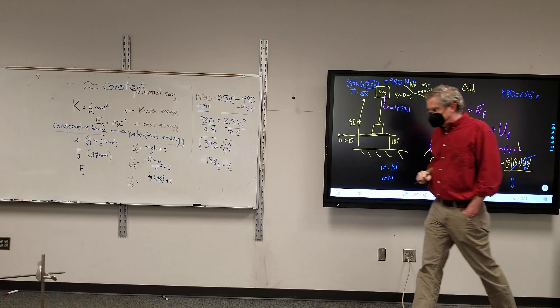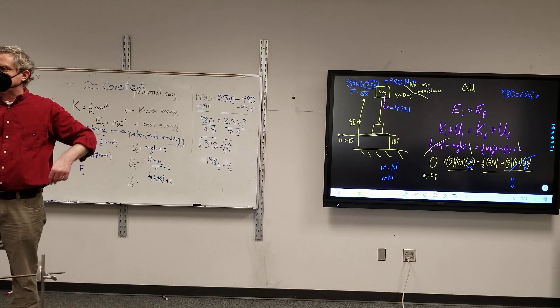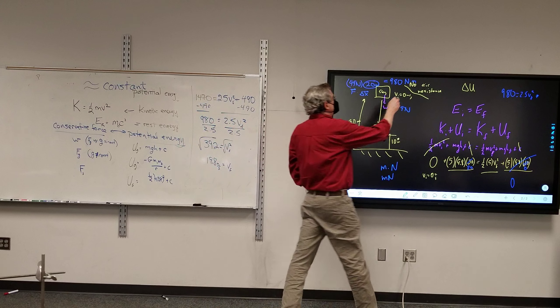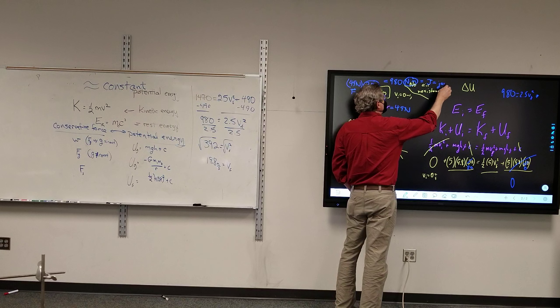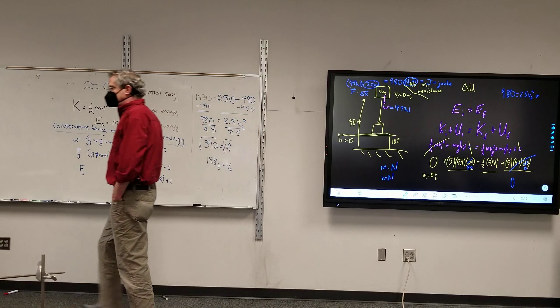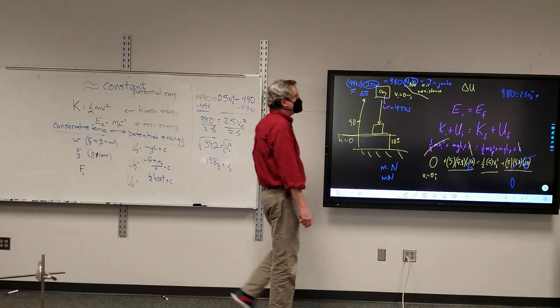So 980 newton meters. Physicists, lazy group of people - or some might say they try to be efficient - newton meters is too much for them to say, so they came up with a new unit. This newton meter right here is known as a joule, symbolized by capital J. Someone want to take a wild guess at the person, the scientist who is being honored? The unit of newton - who is being honored with that one? Newton. Joule, who is being honored? Joule. Yes. James Prescott Joule.